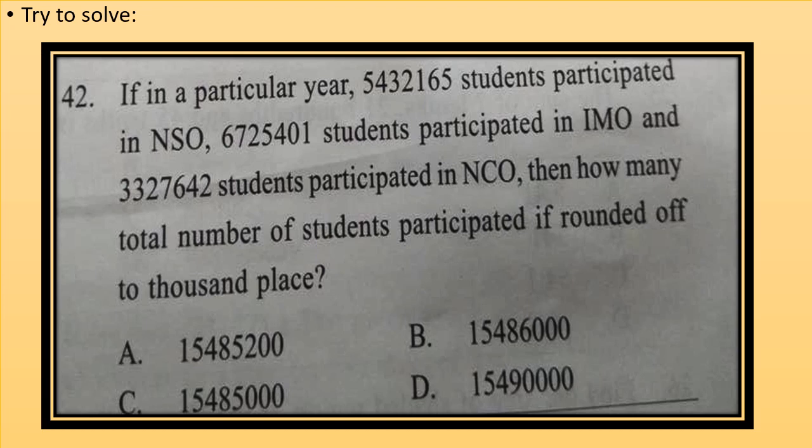If in a particular year 5432165 students participated in NSO, 6725401 students participated in IMO, and 3327642 students participated in NCO. Then how many total number of students participated if rounded off to thousand place. So we have to calculate the total number of students participated. If rounded off to 1000 place. Try to solve the question.